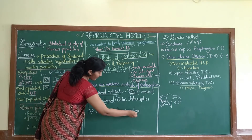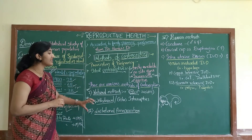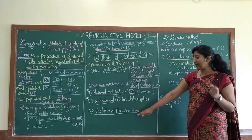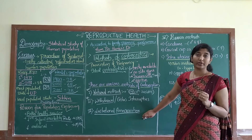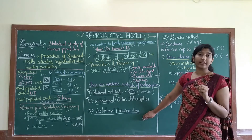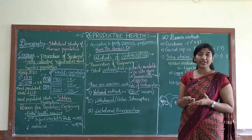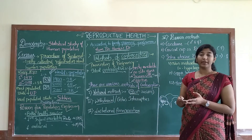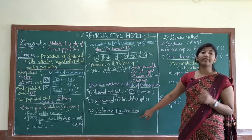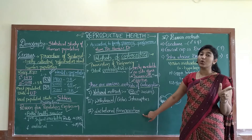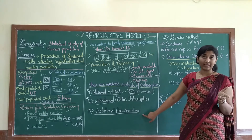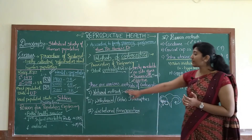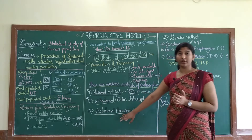The third natural method is lactational amenorrhea. This is only applicable to ladies who are in the lactation period — that is, producing and secreting milk in the mammary glands after parturition to nourish the baby. During this period there is no menstruation, which means there is no ovulation and no egg for fertilization. This is a safe period during which a woman will not get pregnant.